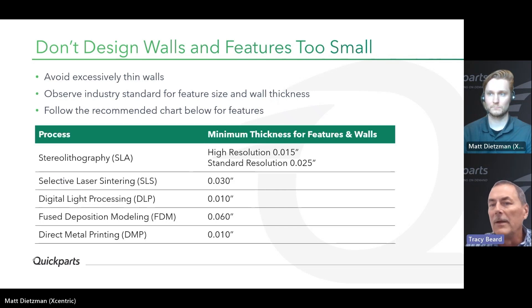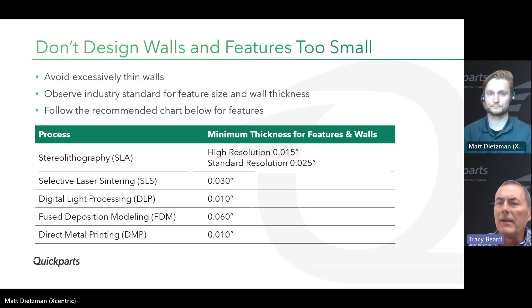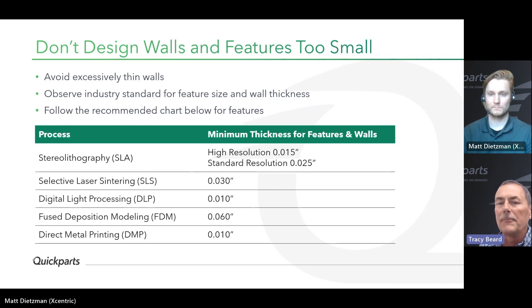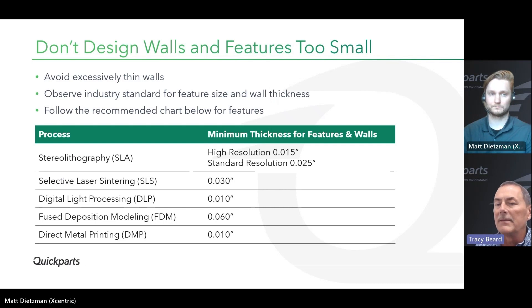The chart recommends minimum feature sizes and wall thicknesses by process. Stereolithography high-resolution: 15 thousandths minimum feature size, with a 2-thousandths layer thickness and 3-thousandths laser beam. Standard-resolution SLA: 25 thousandths minimum feature size, with a 4-thousandths layer and 5-thousandths laser size. Selective laser sintering: 30 thousandths. DLP (digital light processing): 10 thousandths. FDM (fused deposition modeling): 60 thousandths. Direct metal printing (DMP): 10 thousandths.